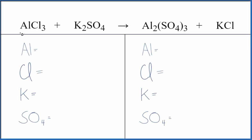Let's balance the equation for AlCl3 plus K2SO4, aluminum chloride, sometimes called aluminum trichloride, and potassium sulfate.